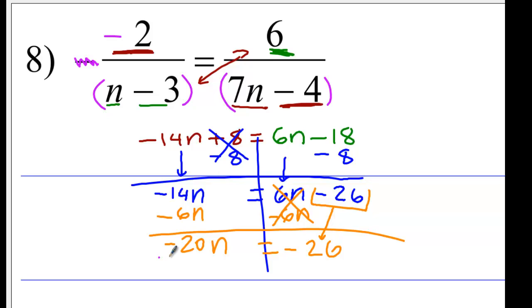Finally, divide everything by the coefficient of n, which is negative 20. So, n equals negative 26 divided by negative 20, which gives you 1.3.